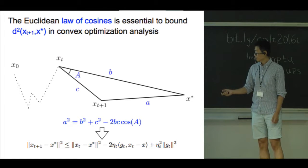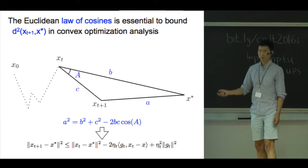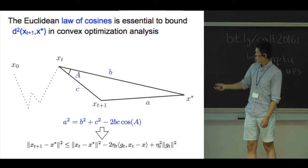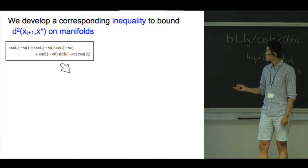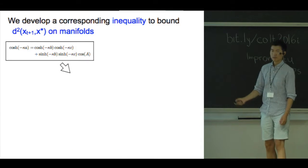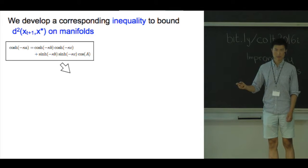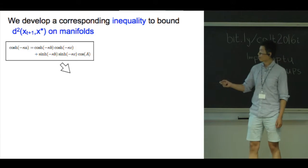And it is often used as the first step for any non-asymptotic convergence rate analysis in convex optimization. However, on Riemannian manifolds, such a Euclidean law of cosines doesn't hold.